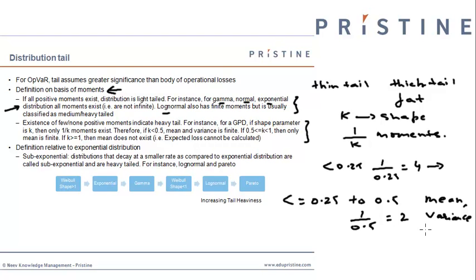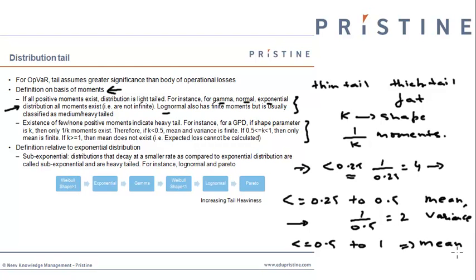When shape parameter is between 0.25 and 0.5, skewness and kurtosis are infinite, so GPD will be a fatter-tailed distribution as compared to when the shape parameter is less than 0.25. If the shape parameter is from 0.5 to 1, then only mean can be estimated and variance, skewness, and kurtosis will be infinite. So as compared to the previous case, GPD will be fatter-tailed in this range.